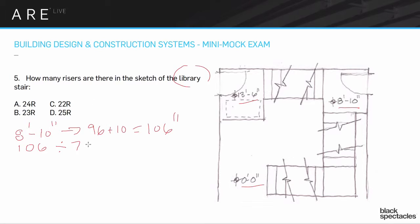As it turns out, 106 ÷ 7 gives us 15.14, so we have 15.14 risers. Obviously there's a problem — you can't have a 0.14 riser; it's a little sliver that would be a trip hazard. So we're going to round up to 16 risers. Why round up? Because if we rounded down to 15, that extra bit would make each riser slightly over 7 inches, which exceeds the maximum.